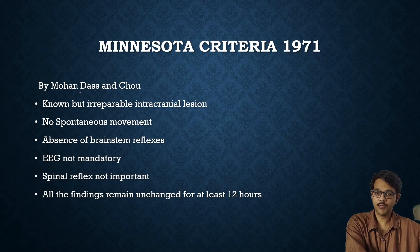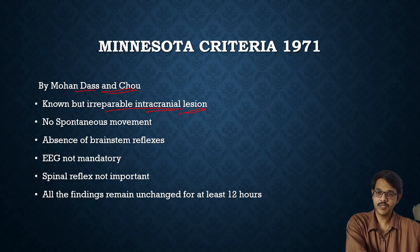Minnesota criteria was proposed by Mohandas and Chao. The first point is that the person must be diagnosed with a known but irreparable intracranial lesion — such as a tumor or hemorrhage — that is not treatable. Because of that lesion, the person may have no spontaneous movement. Similar to Harvard's criteria, there are no reflexes present; however, EEG is not mandatory in Minnesota criteria, and spinal reflexes are also not measured. When these changes remain for 12 hours, the person is considered brain stem dead according to Minnesota criteria.